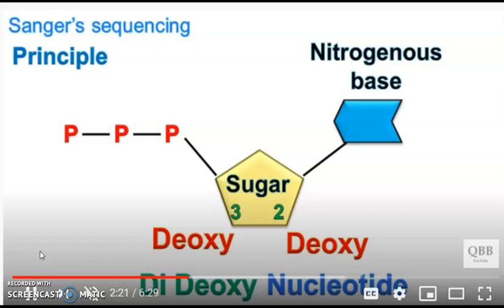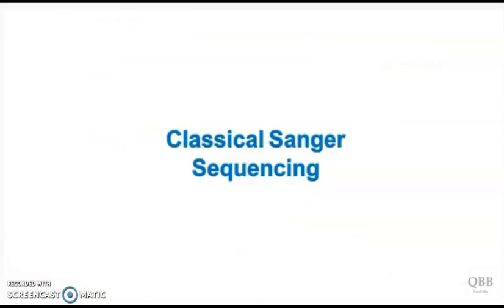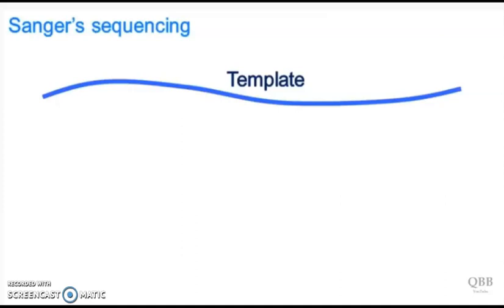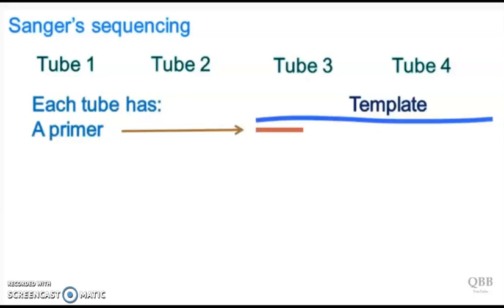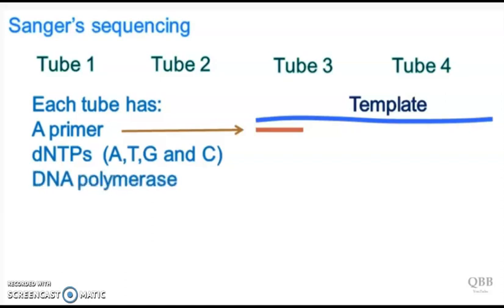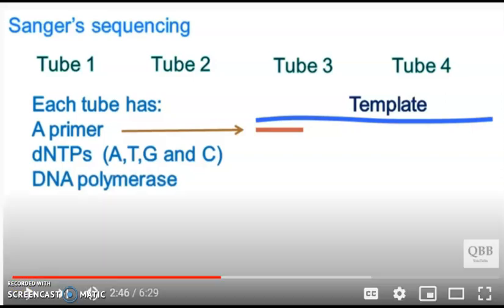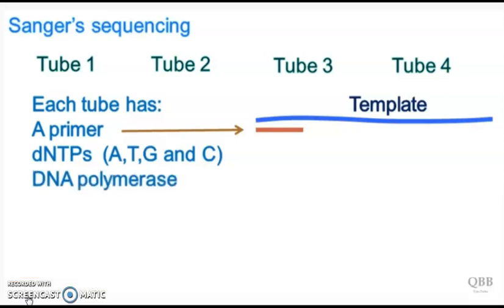In the classical method of Sanger sequencing, the template DNA to be sequenced is divided into four tubes. Each tube has a primer that will bind to the template DNA. All the four dNTPs, that is dATP, dTTP, dGTP, and dCTP, are present along with DNA polymerase enzyme which adds dNTPs on the template DNA.